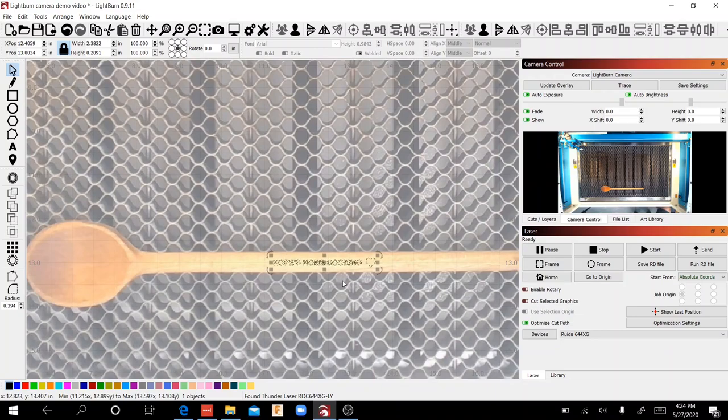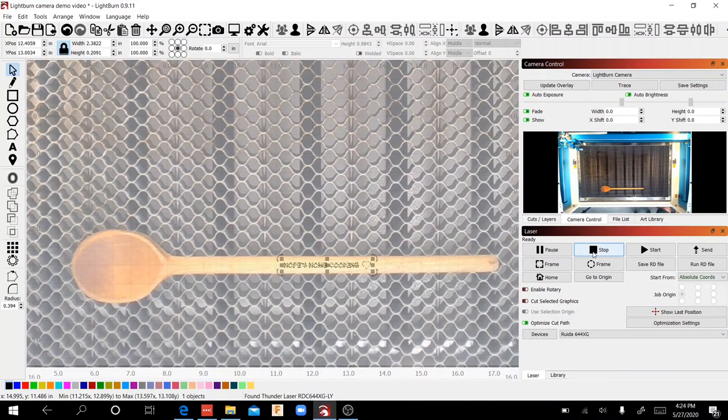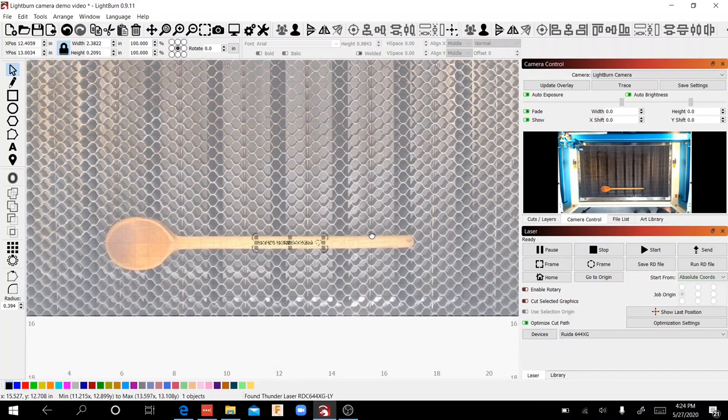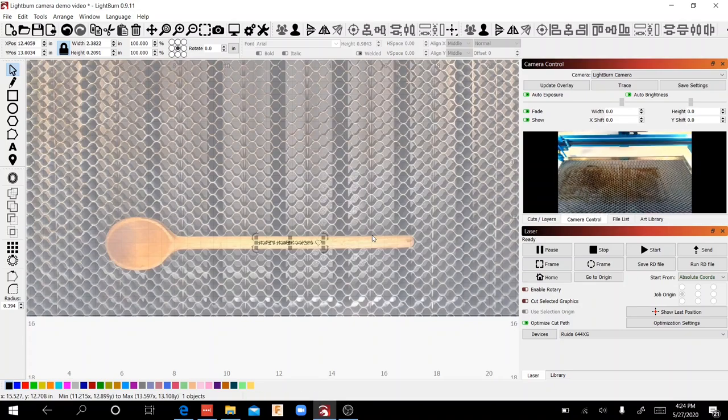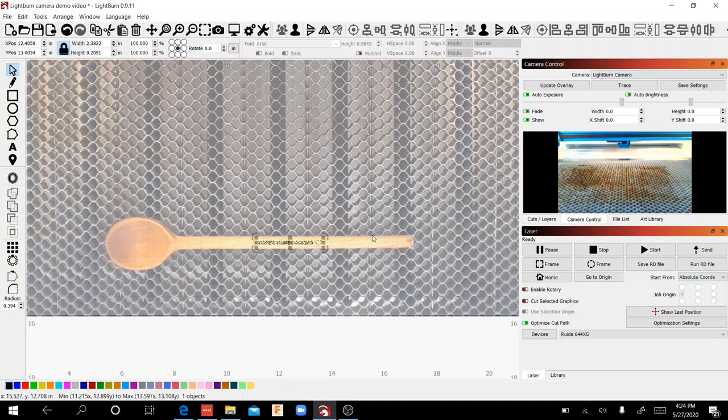And then we're going to go ahead and that's as easy as it is. All I need to do now is send the file over to the laser and shut the lid and we can go ahead and burn this. So I'm going to go ahead and shut the lid. We're going to send the file over and then we'll get the camera on it and we'll burn it.